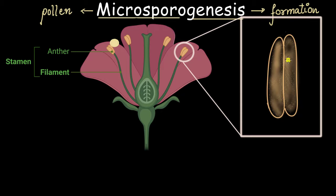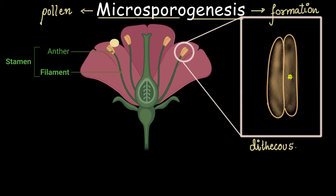Here we have taken a bilobed anther. Anthers can be single-lobed as well. The single-lobed anthers are called monothecal and the bilobed anthers are called dithecal. The word dithecal very correctly explains the structure: 'di' means two, so we can see two lobes, and 'thecal' means compartments. So this anther has two compartments, and the pollen is produced inside this anther.